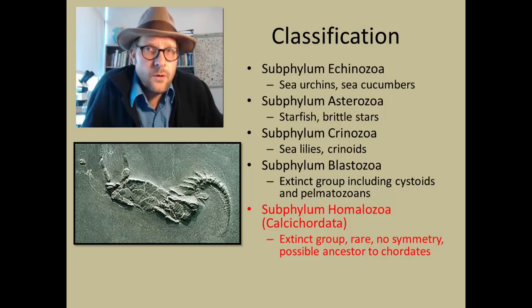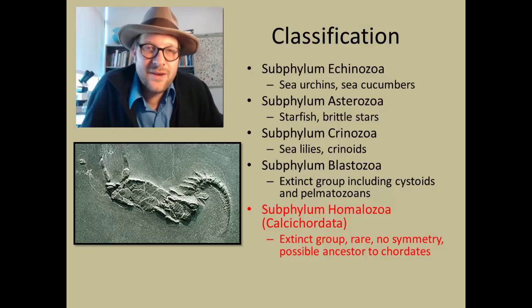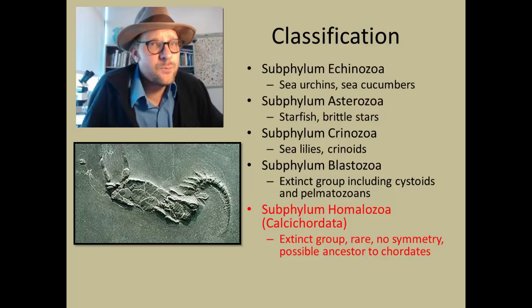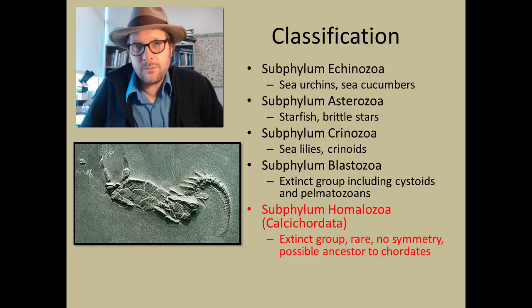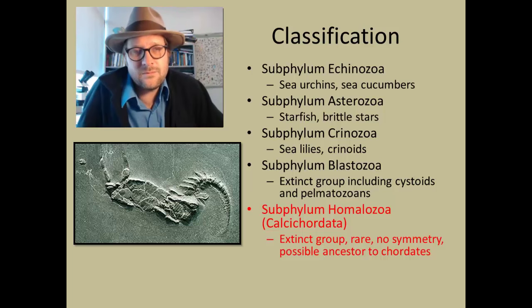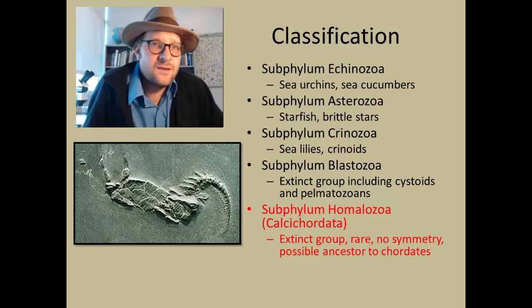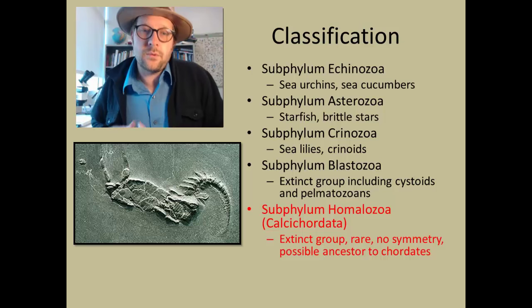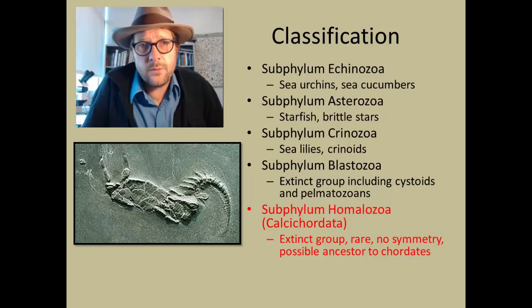The fifth and final group of echinoderms is another totally extinct group, the Homalozoa, also known as the Calcichordates. These fossils are really weird, since unlike other echinoderms they do not have a five-point symmetry or even a bilateral symmetry. A few scientists have proposed that they are related to chordates, but this group exhibits a calcite skeleton unlike other chordates. The calcite skeleton is much more similar to what we find in echinoderms. They are only known from the early Paleozoic, having gone extinct during the Devonian.